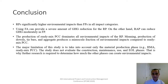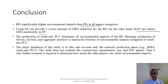In conclusion, rigid pavements have significantly higher environmental impacts than flexible pavements in all impact categories. Using fly ash can provide a significant amount of greenhouse gas reduction for rigid pavements, while RAP can reduce greenhouse gas moderately in flexible pavements. The production of ready-mixed Portland cement concrete dominates all environmental impacts of rigid pavements, meaning production of dowels, tie bars, and aggregates produces a minuscule fraction compared to concrete. A major limitation of this study is that only the material production phase is considered; construction, maintenance, fuel, and end-of-life phases are not taken into account. Further research is required to determine the environmental impacts of these other phases.